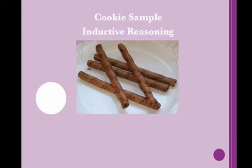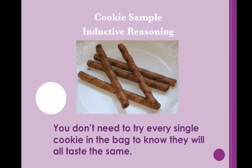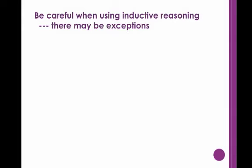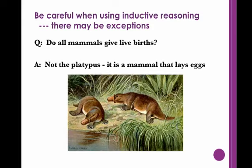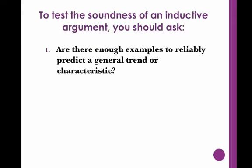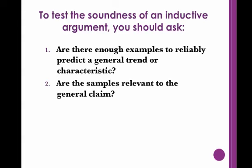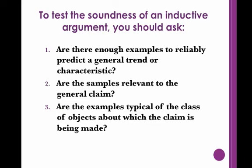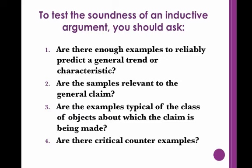Say you are in a grocery store and a nice little old lady lets you try two cookies to entice you to buy a package. If you liked the cookies, you would conclude that all of the cookies in the package tasted just as good. You don't need to try them all to come to that conclusion. With inductive reasoning, you need to be cautious in making your claims, because no matter how many cases you present as evidence for your claim, it is always possible that there are exceptions to the rule. For instance, many people may agree with the claim that all mammals give live births. However, the platypus is an exception to this rule, as they are a species of mammal that lays eggs. To test the strength of an inductive argument, you should ask: 1. Are there enough examples to reliably predict a general trend or characteristic? 2. Are the sample cases relevant to the general claim? 3. Are the examples typical or representative of the class of objects about which the claim is being made? 4. Are there critical counter examples?